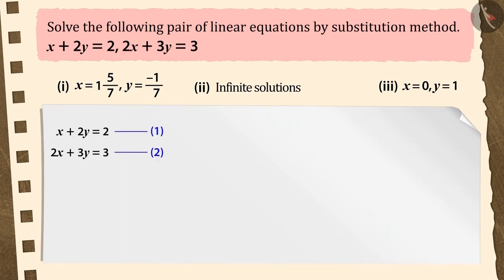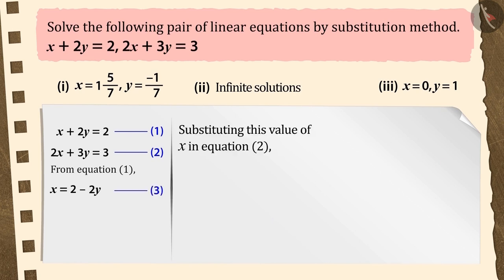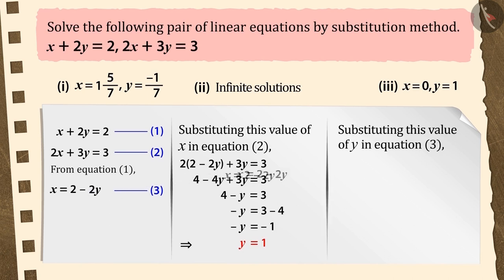To begin with, take equation 1 and express any one variable in terms of the other variable. By substituting the value of x in equation 2 and solving, we will get the value of y as 1. By substituting the value of y in equation 3, we get the value of x is equal to 0.